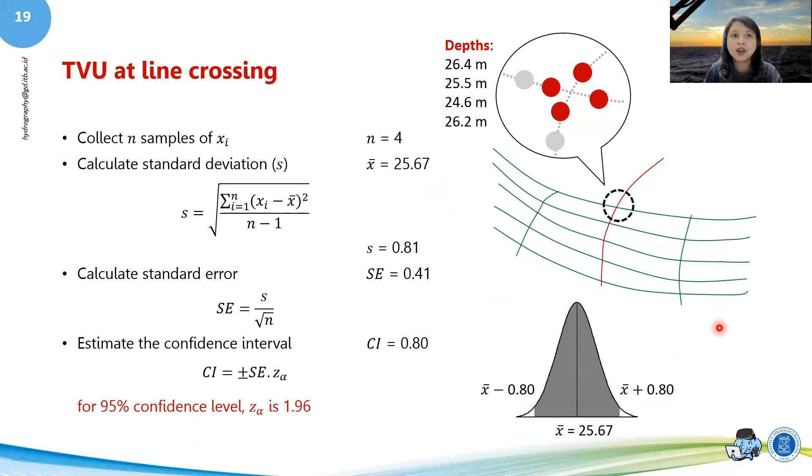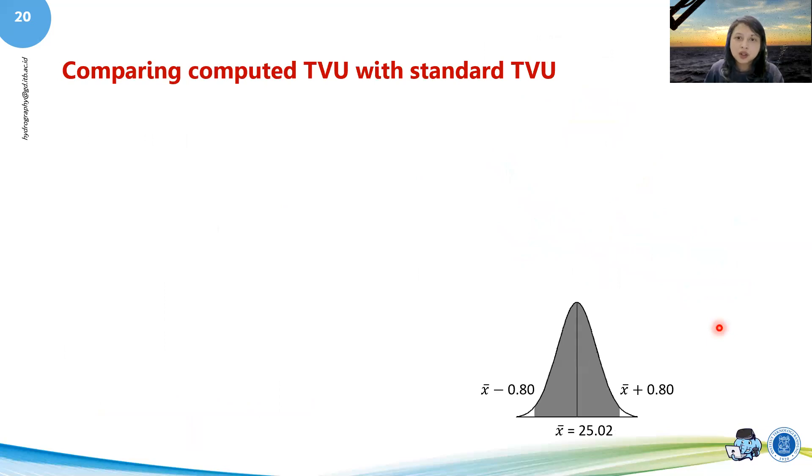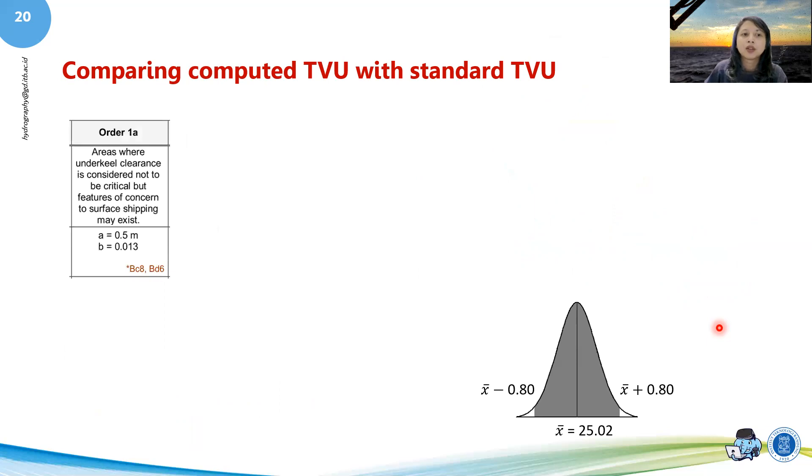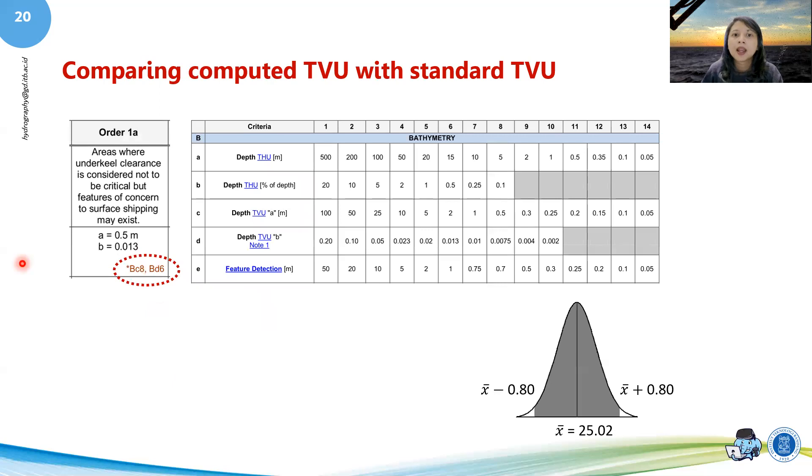Then you want to compare your computed TVU with the standard TVU. We'll go back to order 1a. You can either just take a and b all together, or if you want to know how a and b is decided, it's actually from this bit. You can see in the S44 another table, and this table shows the criteria and which type of uncertainty that you're looking for.